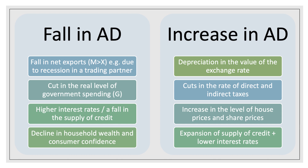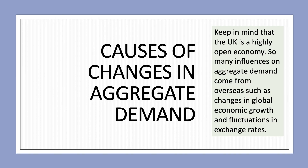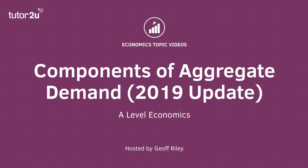So what you need to be aware of is some of the factors that can cause increases or decreases in aggregate demand. Keep in mind that the UK is a highly open economy, so many of the influences on aggregate demand come from overseas economies — such as a change in the pace of global growth or an unexpected fluctuation in exchange rates. There are both domestic and external causes of changes in the components of aggregate demand.